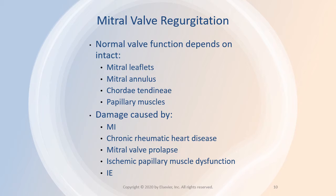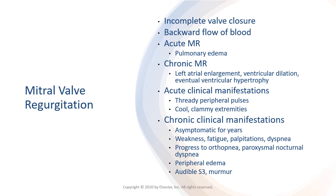Myocardial infarct with left ventricular failure increases the risk for the chordae tendineae and acute mitral regurgitation. The manifestations of mitral regurgitation are divided into the acute and the chronic. In the acute form, it is generally poorly tolerated. There is a new systolic murmur with pulmonary edema, and cardiogenic shock develops rapidly.